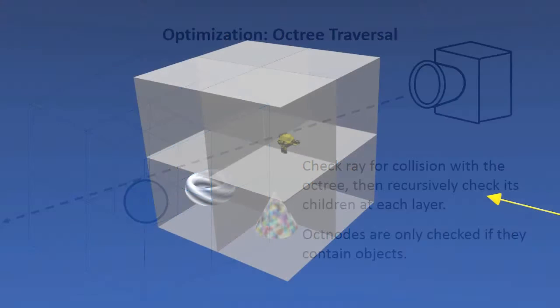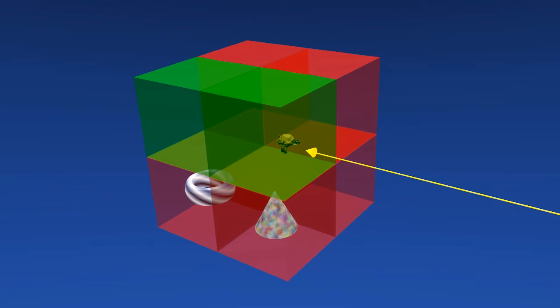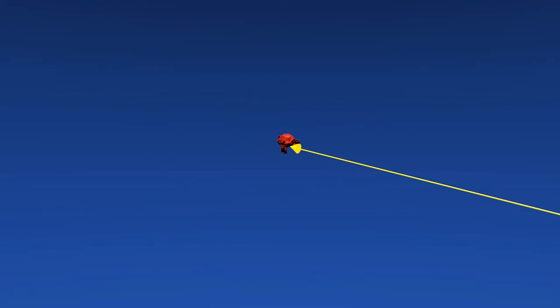Here's a 3D example of what it would look like to intersect an octree containing a monkey and some other objects. As you can see, we recursively check each level of the octree to figure out which node contains the object we want, and then we're able to run an intersection test on it.